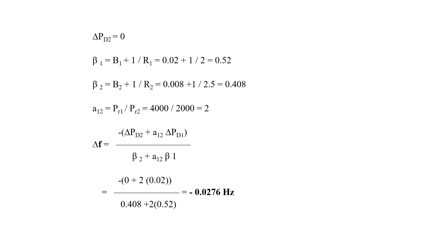I have calculated area frequency response characteristic beta 1 = B1 + 1/R1 = 0.02 + 1/2 = 0.52. Similarly, beta 2 = B2 + 1/R2 = 0.008 + 1/2.5 = 0.408. Now, A12 = PR1/PR2 = 4000/2000 = 2.